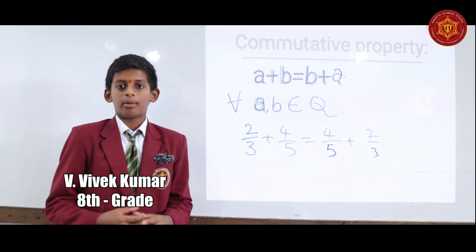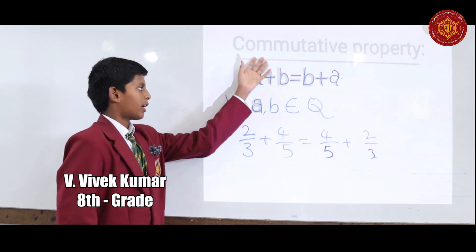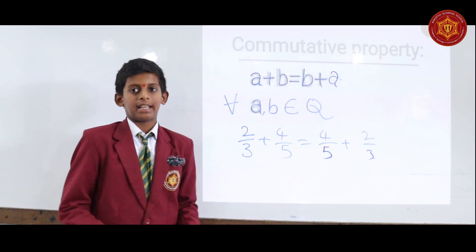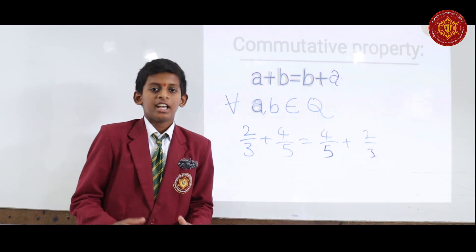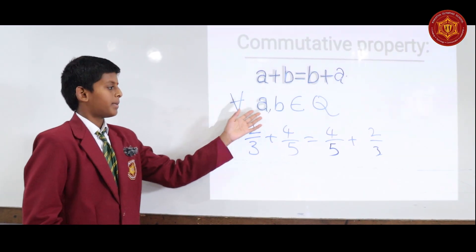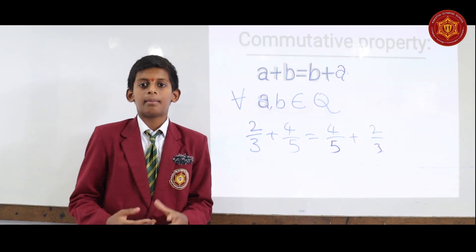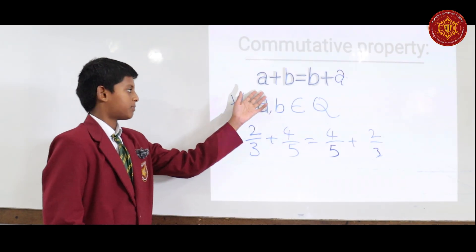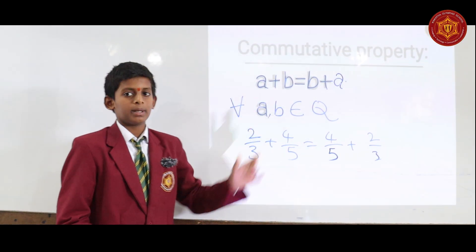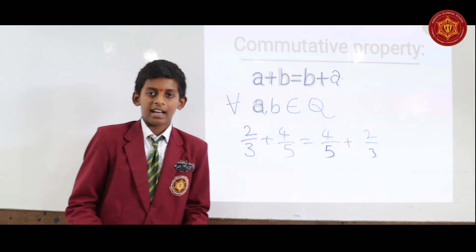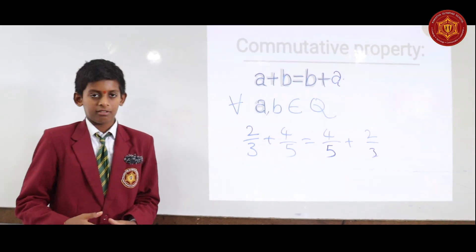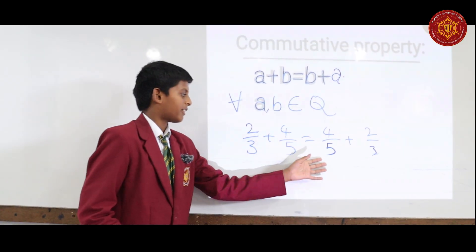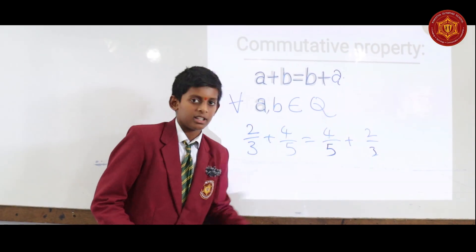Today, I would like to explain the concept of commutative property under addition in rational numbers. If A and B are any two rational numbers, then A plus B is equal to B plus A. For example, 2/3 plus 4/5 is equal to 4/5 plus 2/3. Thank you.